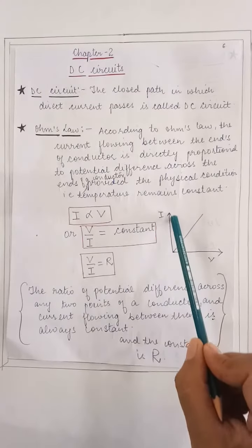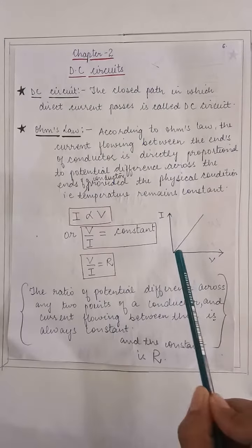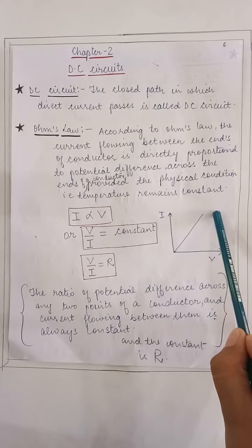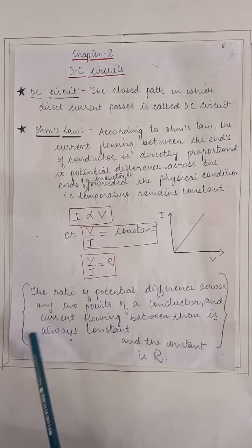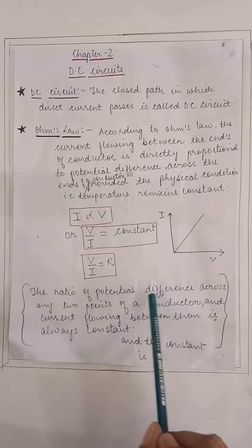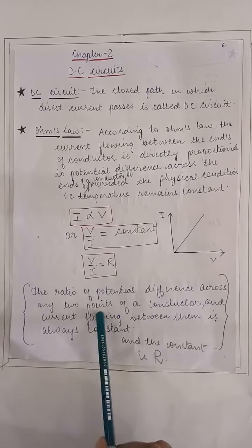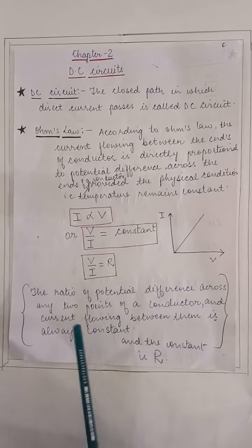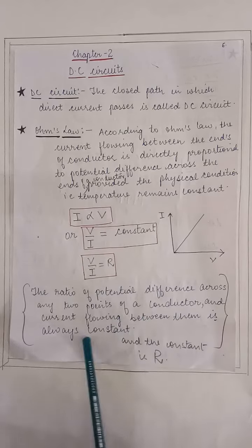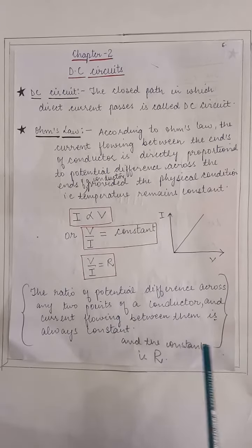If we are going to draw a graph between I and V, it will always be a straight line. According to Ohm's Law, the ratio of potential difference across any two points of a conductor and current flowing between them is always constant. And the constant is R.